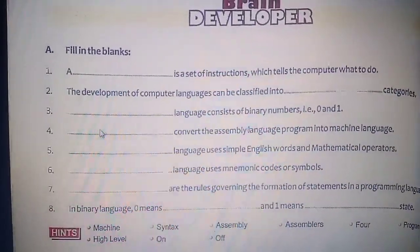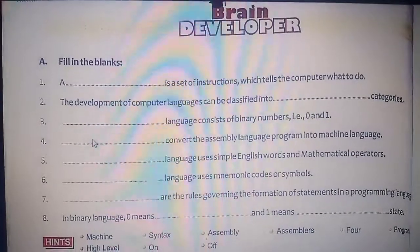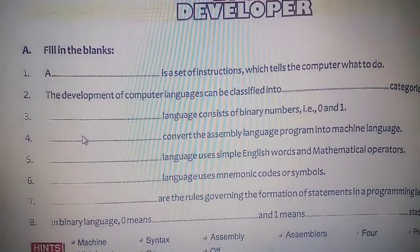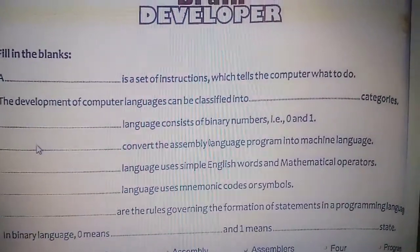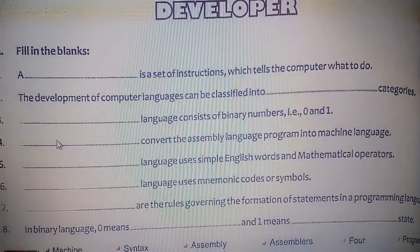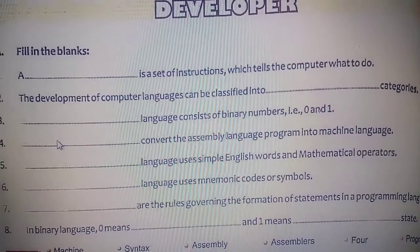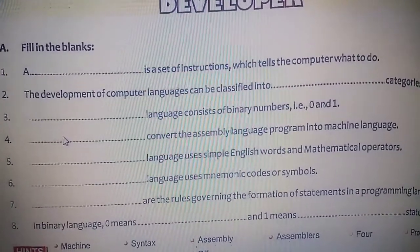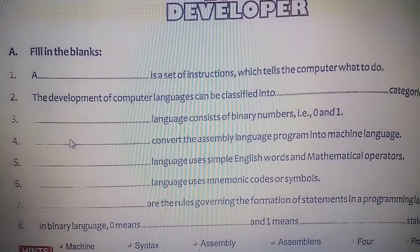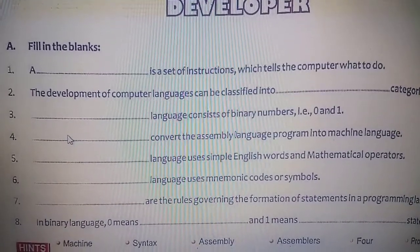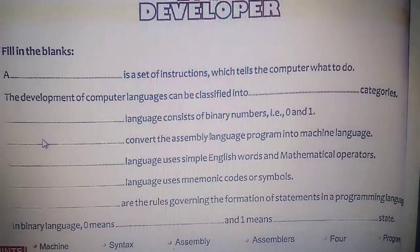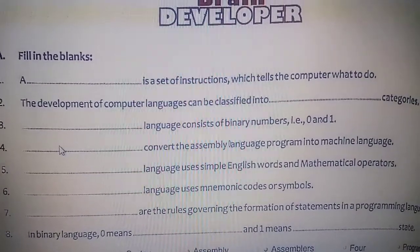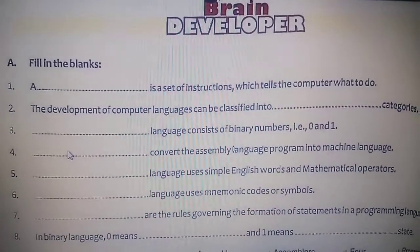Let's discuss the book work of the second chapter. Firstly we will discuss filling the blanks. The first filling the blank is: a dash is a set of instructions which tell the computer what to do. What do we call a set of instructions? A set of instructions is known as a program. So the first answer is program.